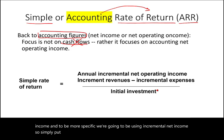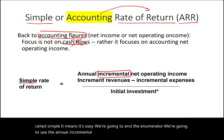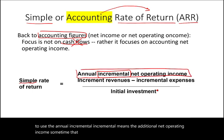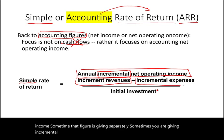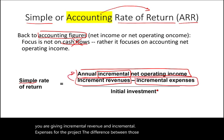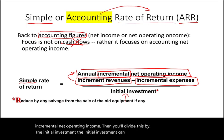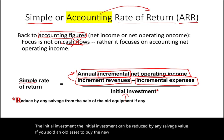To compute the simple rate of return — called 'simple' because it's easy — the numerator uses the annual incremental net operating income. Sometimes that figure is given directly; other times you're given incremental revenues and incremental expenses, and the difference is your annual incremental net operating income. You then divide by the initial investment, which can be reduced by any salvage value received from selling an old asset.